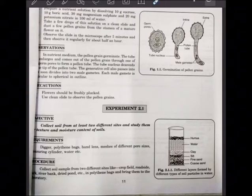Since we are talking about pollen germination and plant formation, remember that every plant will grow nicely only when the soil in which the plant is growing is good. So how to decide which soil is good for the plant's growth? For that, we are doing a simple experiment. The aim is to collect soil from at least two different sites and study them for texture and moisture content.